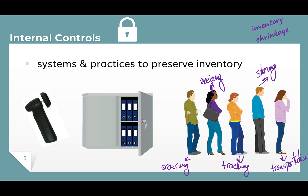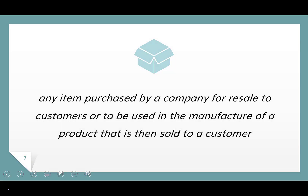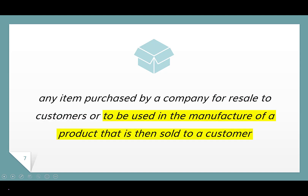Now that's a lot about inventory and we haven't even come to a conclusion about what it actually is. I want to make sure we're on the same page by establishing a common definition of inventory: inventory is any item purchased by a company for resale to customers or to be used in the manufacture of a product that is then sold to a customer. One of the things I really like about this definition is that in it you can see the inclusion of both retailers and manufacturers.